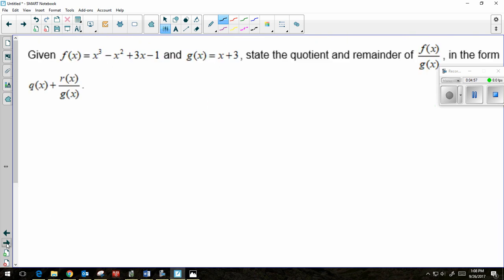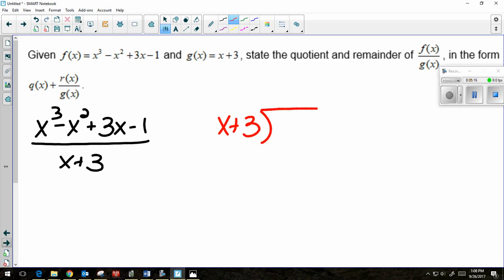Going to take a look at the exact same problem once again, except this time I'm going to use long division. So just as a refresher, my f(x) is going in the numerator and my g(x) is my divisor, which is going in the denominator. So for long division, my divisor x + 3 goes on the outside and then my x³ - x² + 3x - 1 goes on the inside.